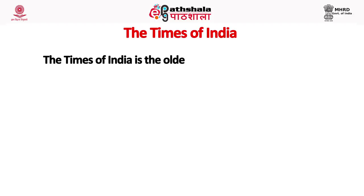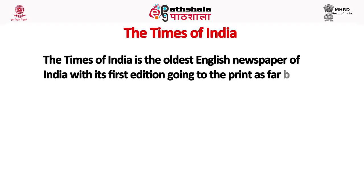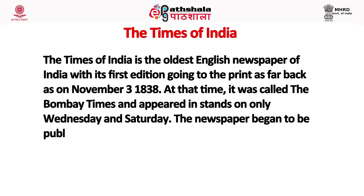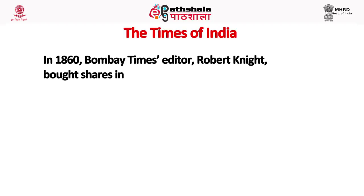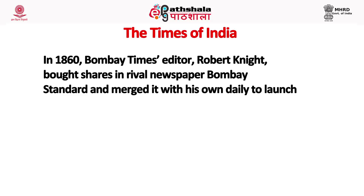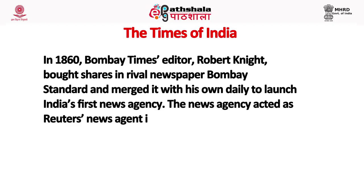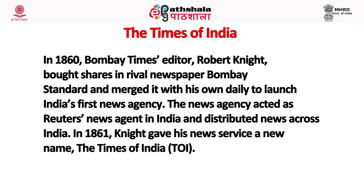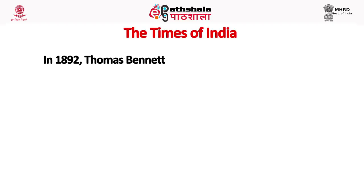The Times of India is the oldest English language newspaper, with its first edition on November 3rd, 1838. At that time it was called the Bombay Times and appeared on Wednesdays and Saturdays only, beginning daily publication in 1850. In 1860, Bombay Times editor Robert Knight bought shares in the rival Bombay Standard and merged it with his own daily to launch India's first news agency, which also acted as Reuters' news agent in India, distributing news across the country.